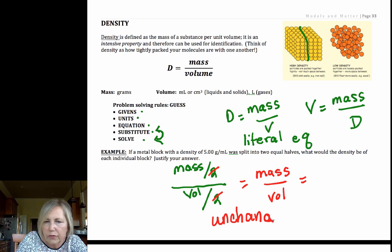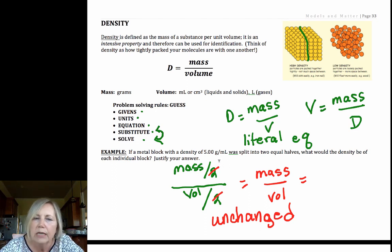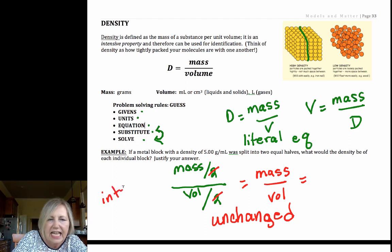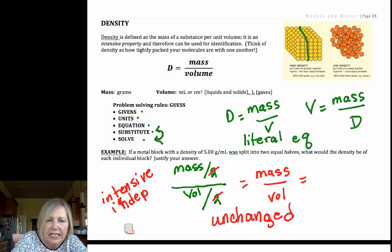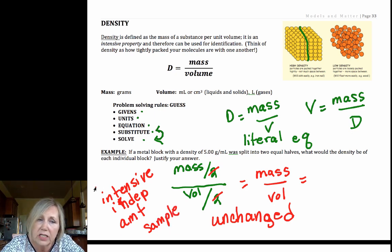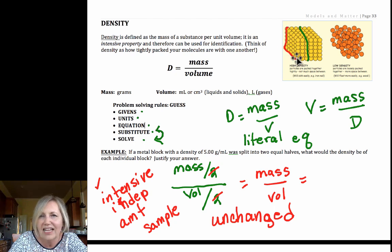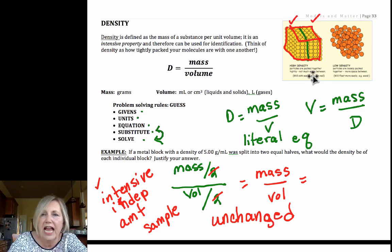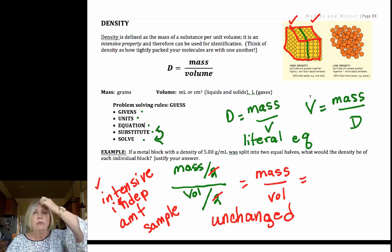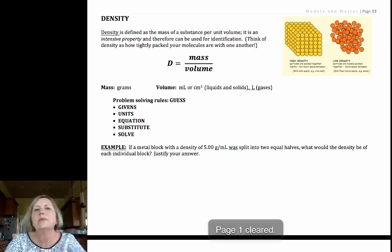The density remains unchanged. Density is what we call an intensive property. It is independent of the amount of sample. The density of this great big block would be the same. The volume changed if we cut it in half, the mass changed of each half, but the mass per volume remained unchanged. A very important concept about density.